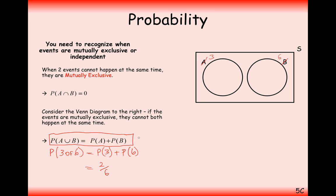If the rule P(A or B) = P(A) + P(B) holds true, then the events are mutually exclusive. If it does not hold, then they are not mutually exclusive. This is a really good rule to test for mutual exclusivity.